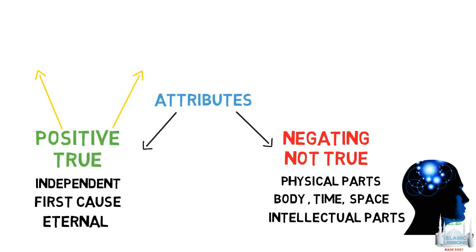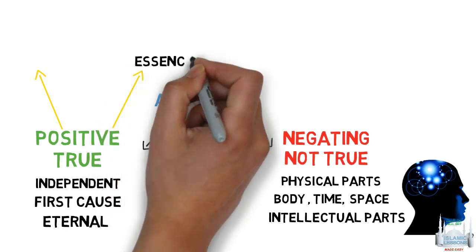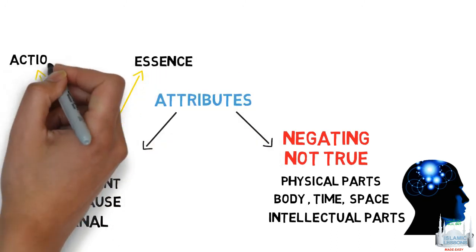The books of philosophy and the books of theology describe the attributes of this necessary being using two particular headings. First is the attributes of essence and then the second is the attributes of action.